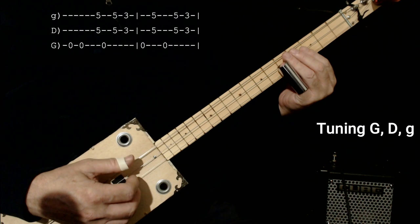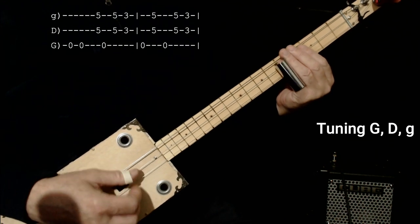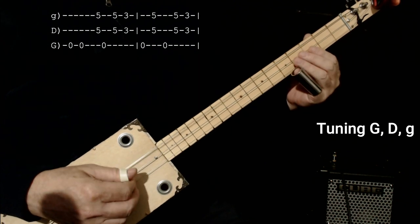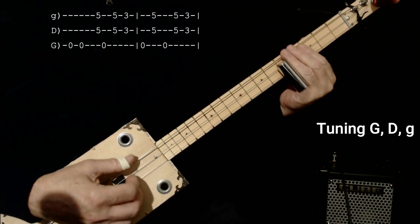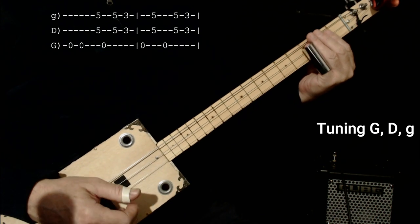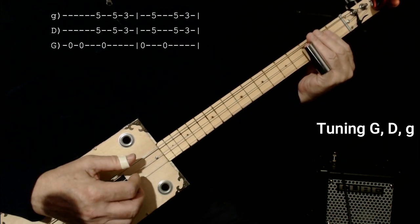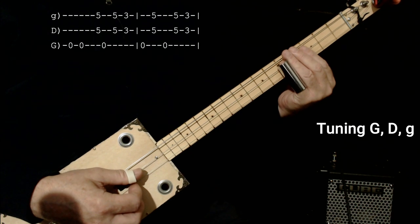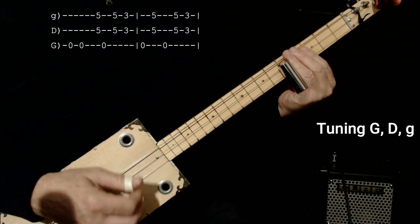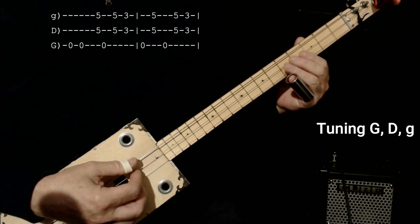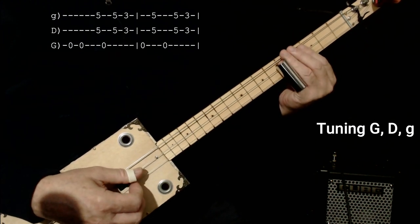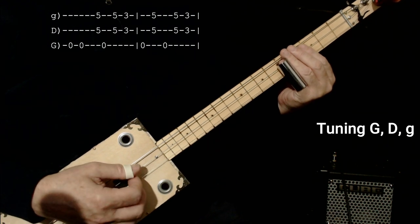Then the rest of the lick is the low string again, just once this time though. And then five five once on the middle and the high string. Low string once again. Then five five again. And then down to three.